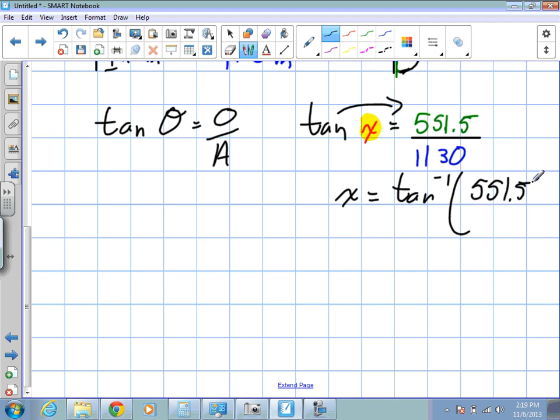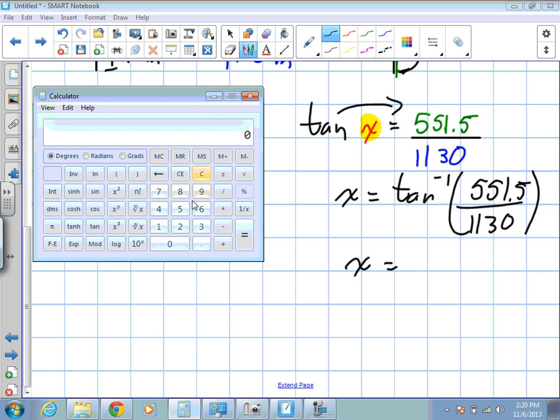And you could have solved this value first. It's completely up to you. My calculator works best if I put it all together. So we take 531.5 divided by 1,130, and we find the inverse of this. Inverse tan. 26. Am I in degrees? Yeah, I'm in degrees. So 26 degrees.